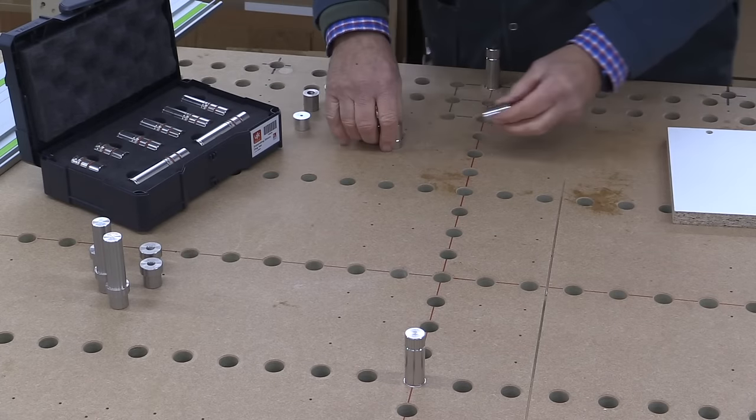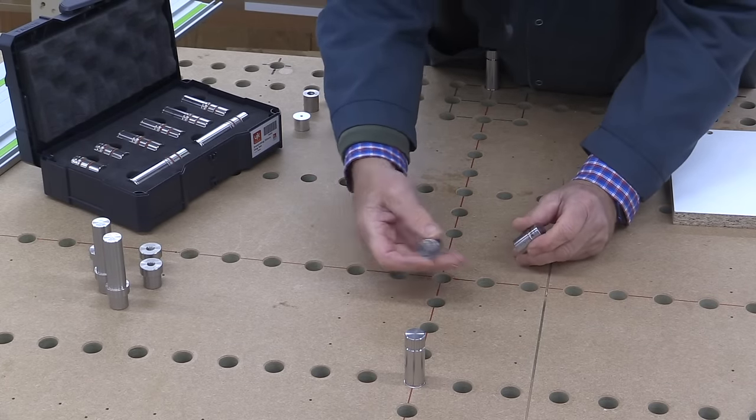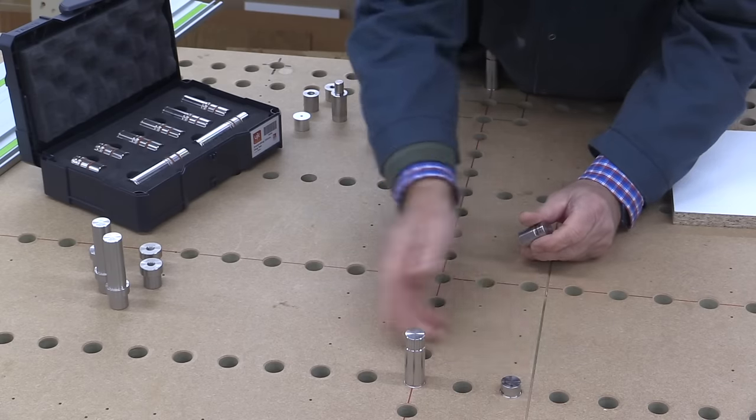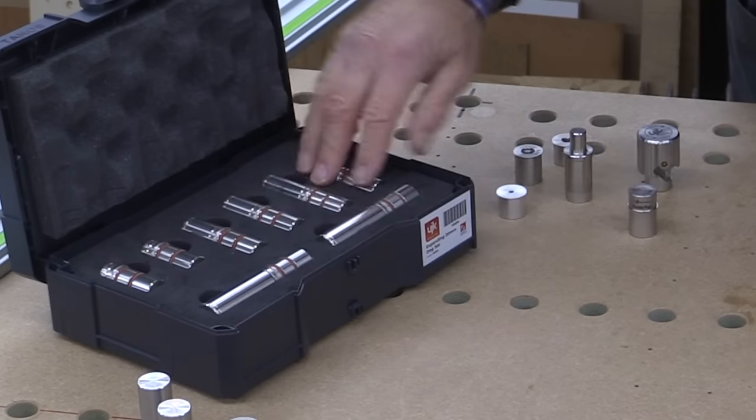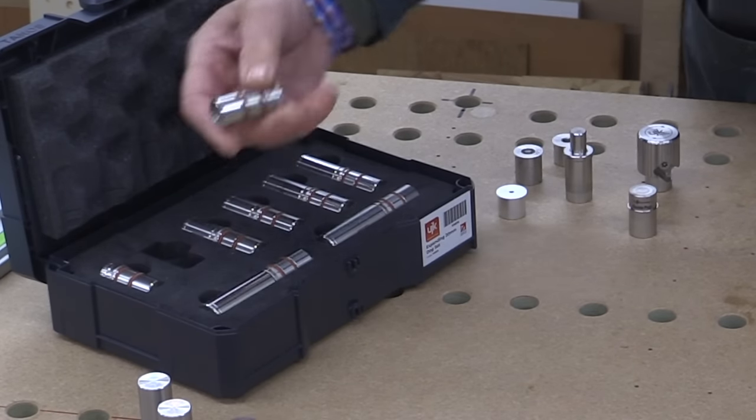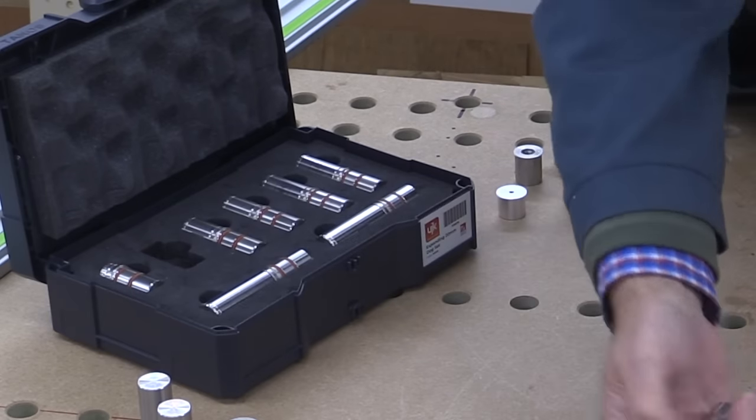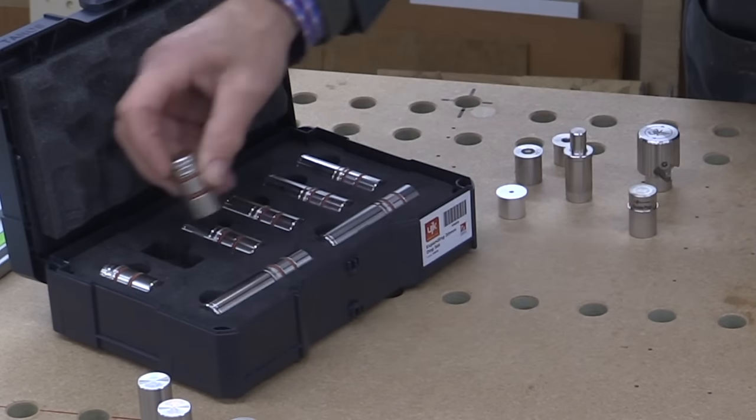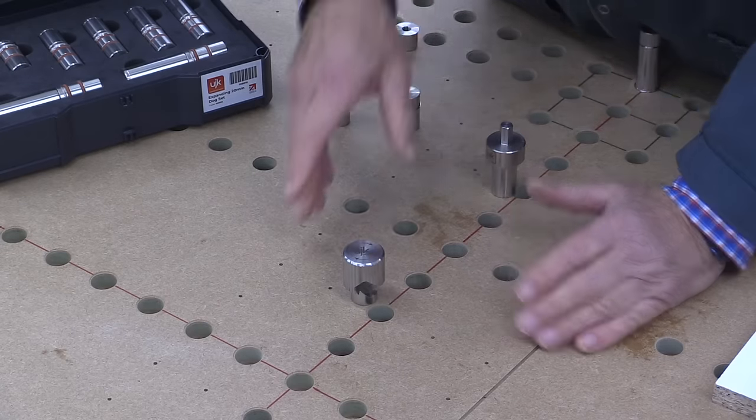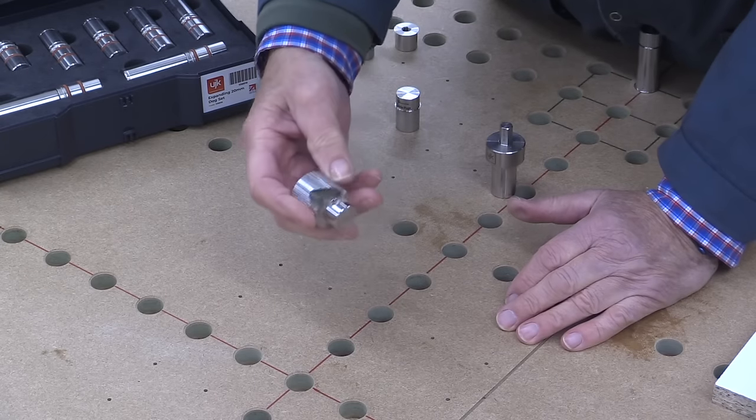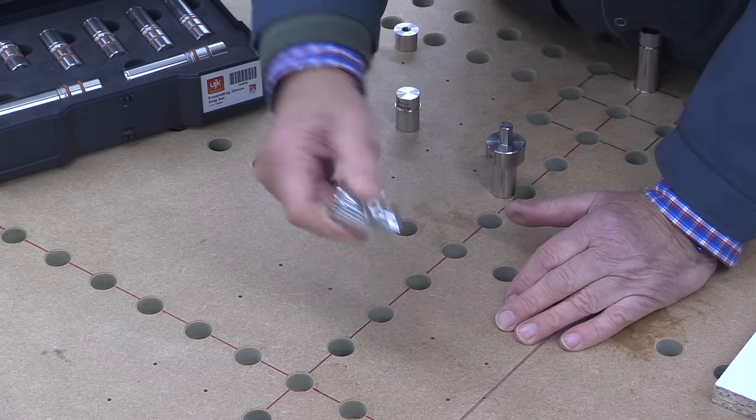And Axminster produced a series of dogs that go with this, little short dogs with a chamfer on which can be placed in line or wherever you wish. And Axminster have also produced these expanding dogs and they come in sets or individually and they're similar to the super dog, but much simpler in design. And in order to produce the chamfer, Axminster initially introduced this handheld chamfer tool, like so.